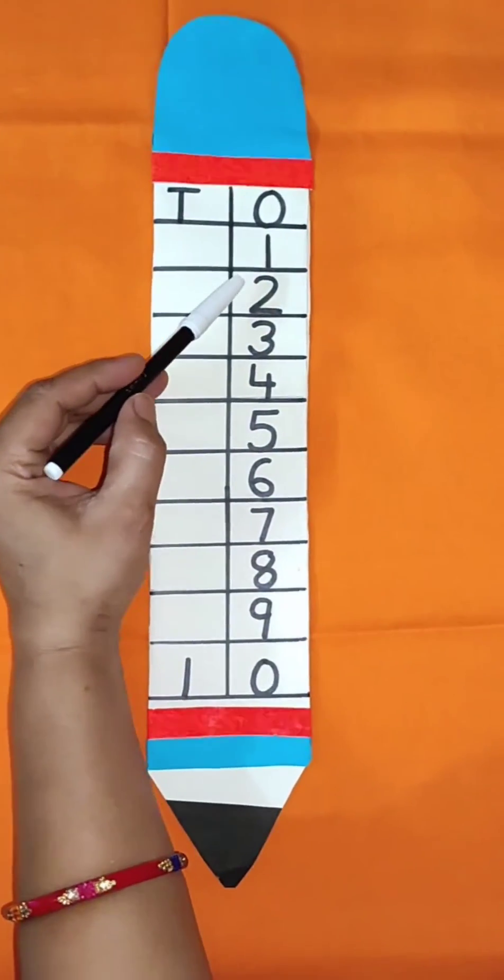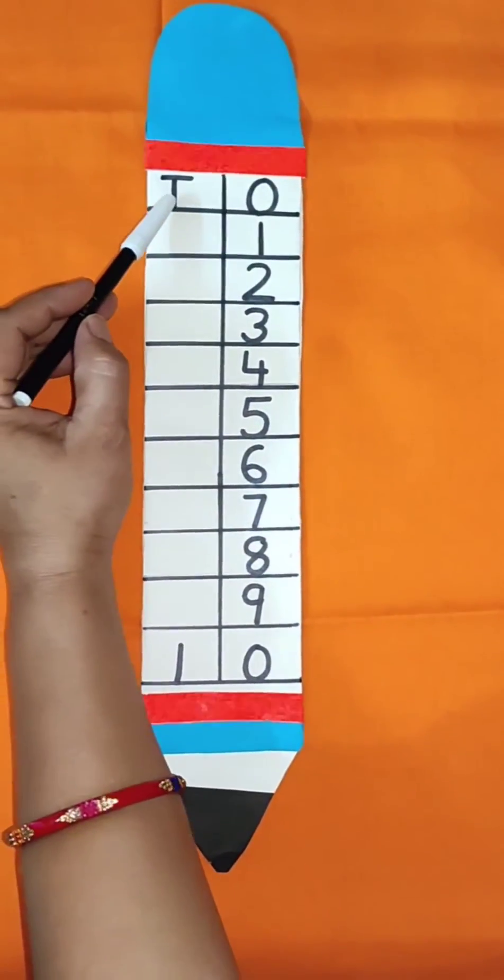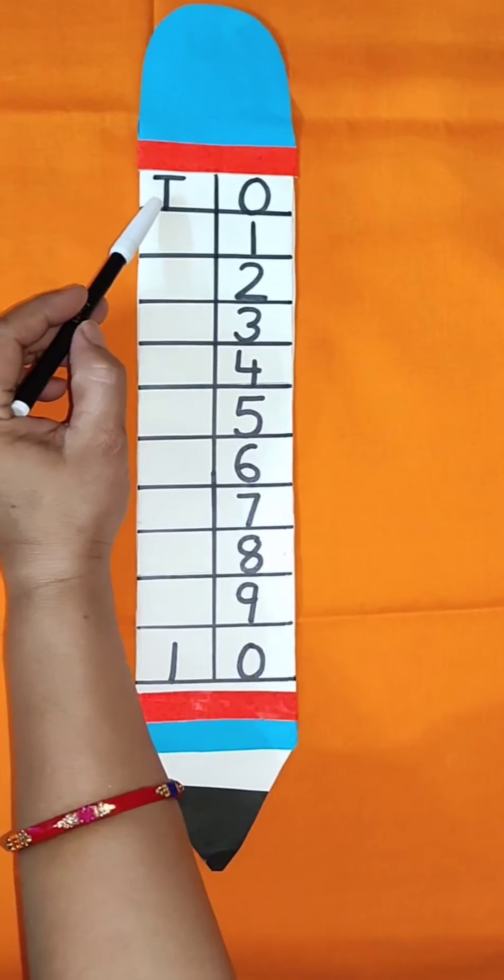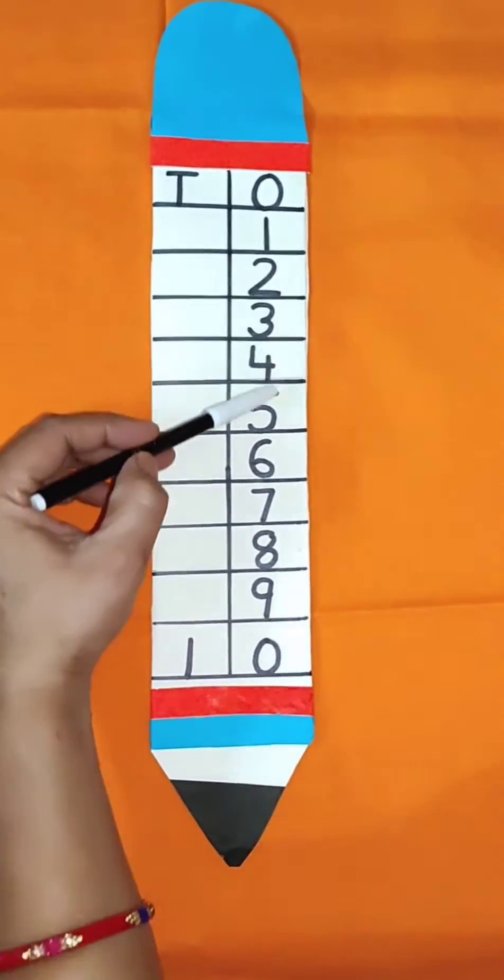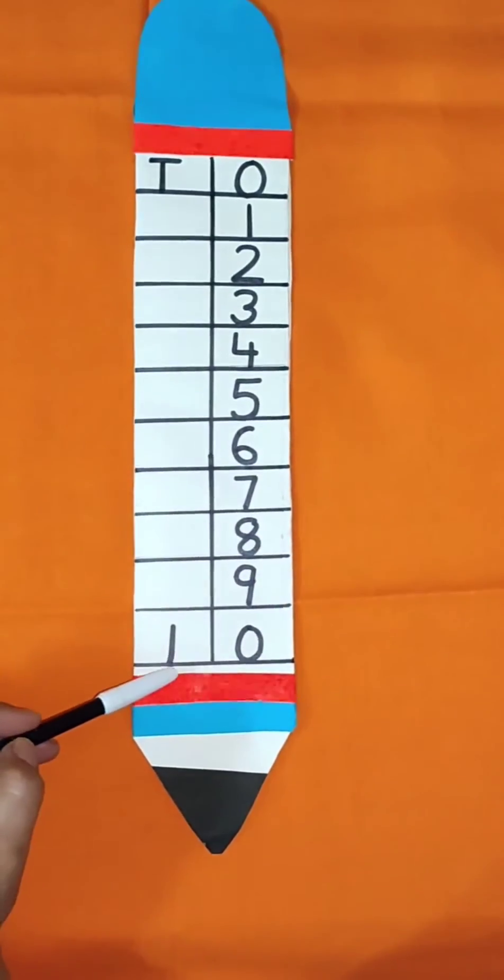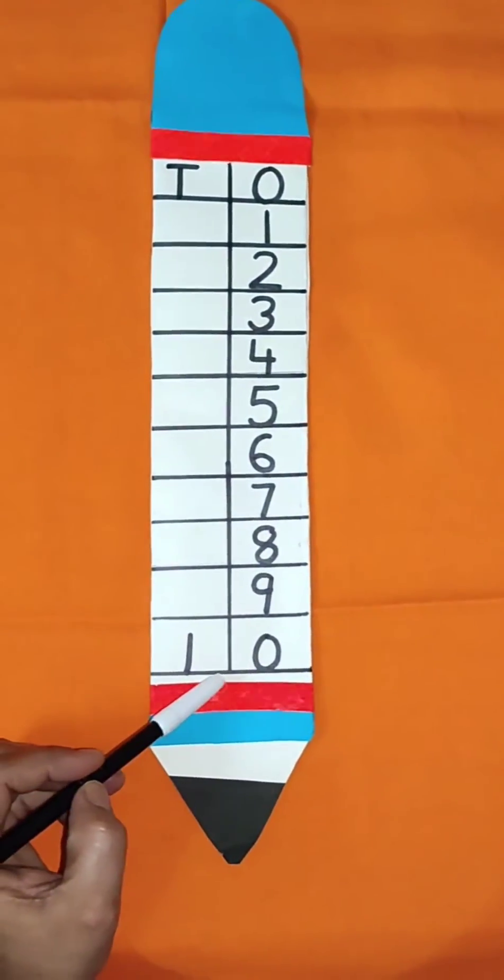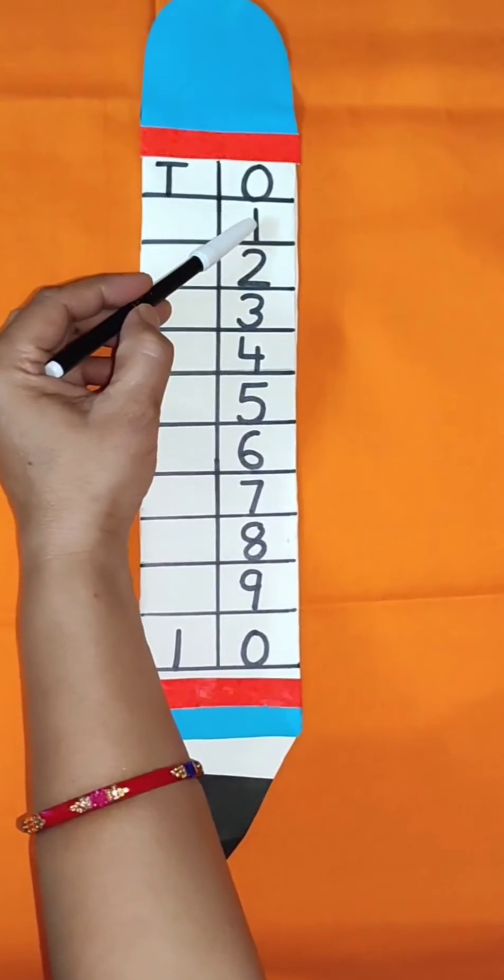So first we will count the number T O. T for tens, O for ones. Ones means single digit number and tens means double digit number.